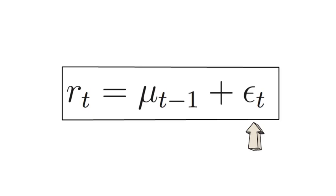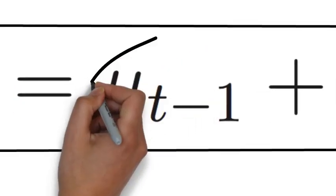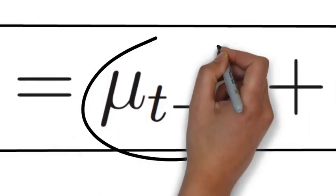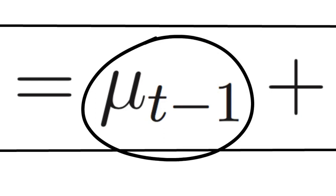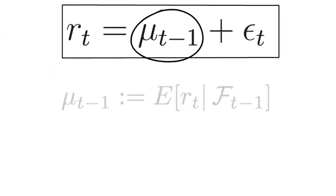Epsilon t is also called the noise component. Now what do we mean by a predictable component? Well, that says that mu t-1 is your best educated guess as of time t-1 about the unknown magnitude of RT.